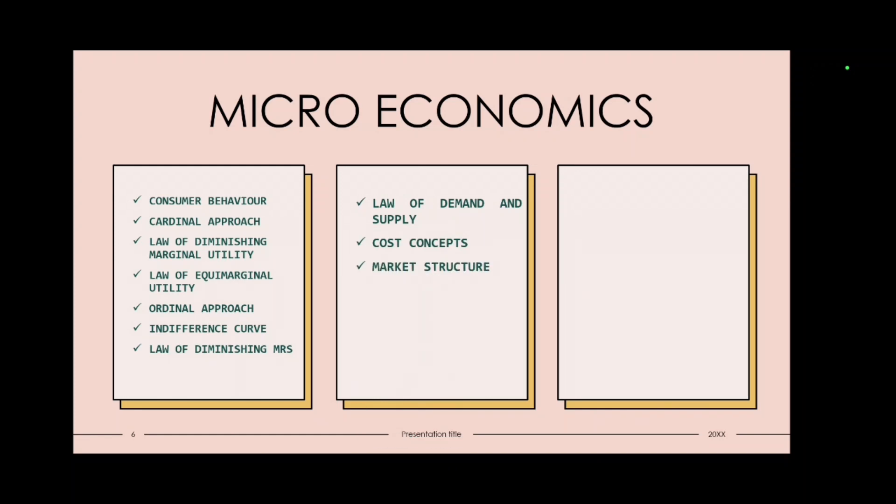Then law of demand and law of supply. Cost concept, market structure. Market structure is very conceptual chapter. Students get confused since their concepts are not clear. So I will try my best to make a very perfect video for it. And market structure, under market structure, market is classified on basis of competition. So there is perfect competition. Then there is imperfect competition.